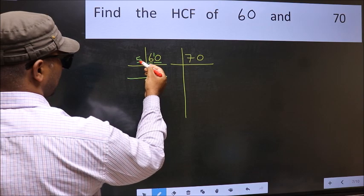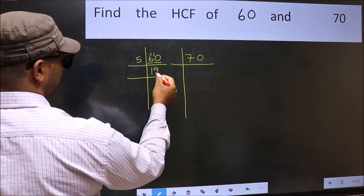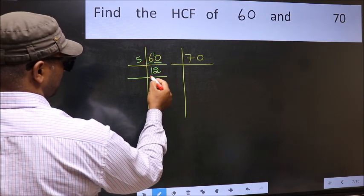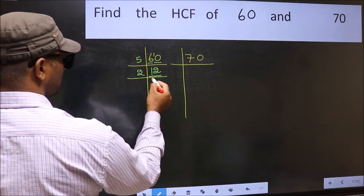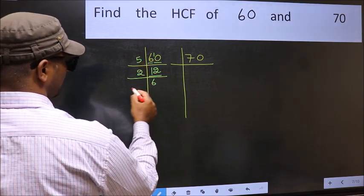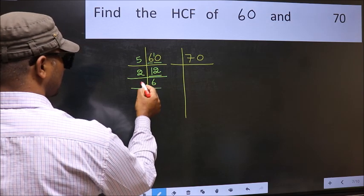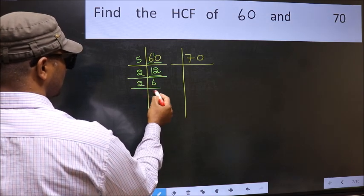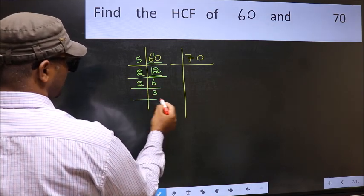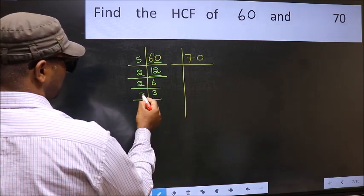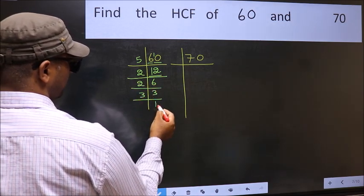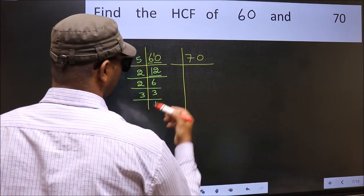When do we get 10 in the 5 times table? 5 times 2 is 10. Now 12 is 2 times 6, which equals 12. And 6 is 2 times 3, which equals 6. 3 is a prime number, so 3 once 3.